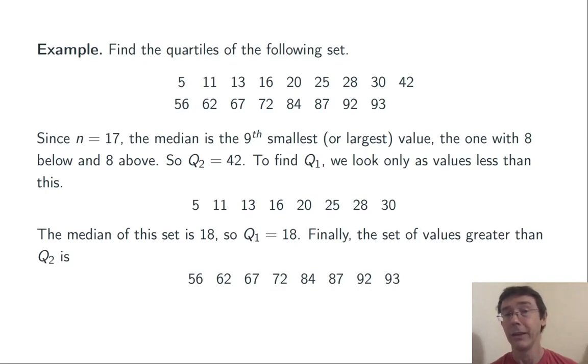Finally, looking at the larger half of the data, taking the median of that, we get 78. So Q1 is 18, Q2 is 42, and Q3 is 78.